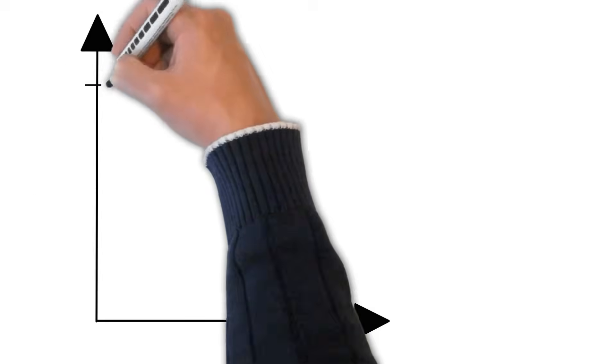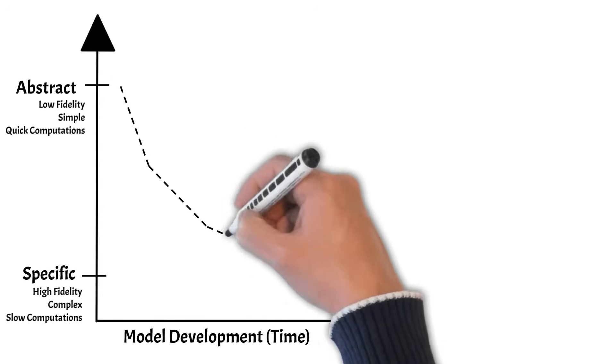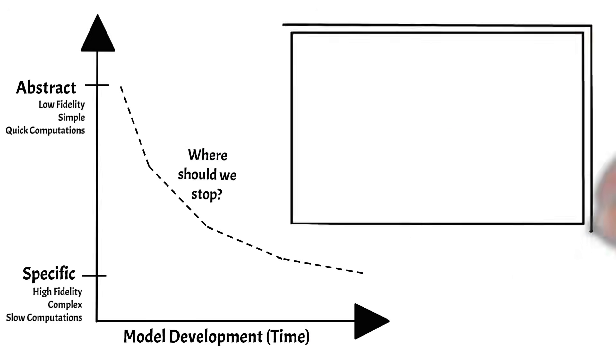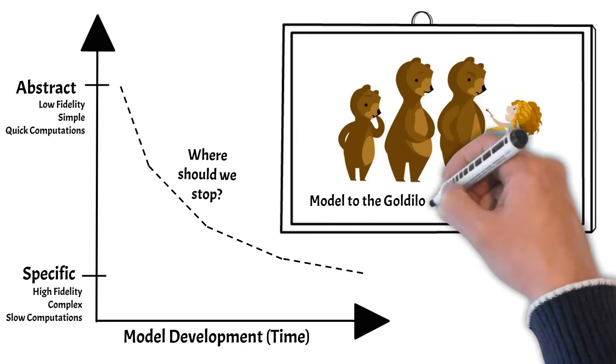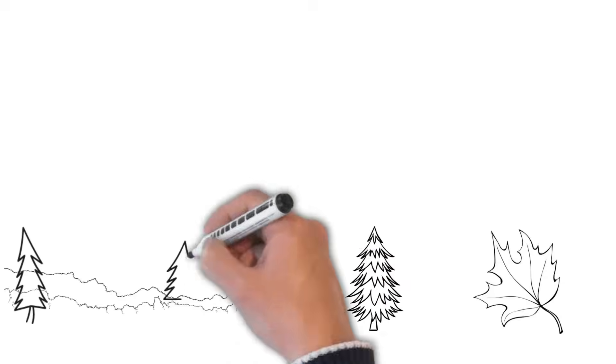Model-based systems engineers have a duty to determine the appropriate level of fidelity to be acceptable for aspects of the system model. Adding more refinement is not always the best path forward. Determining the Goldilocks level of abstraction is a balancing act.